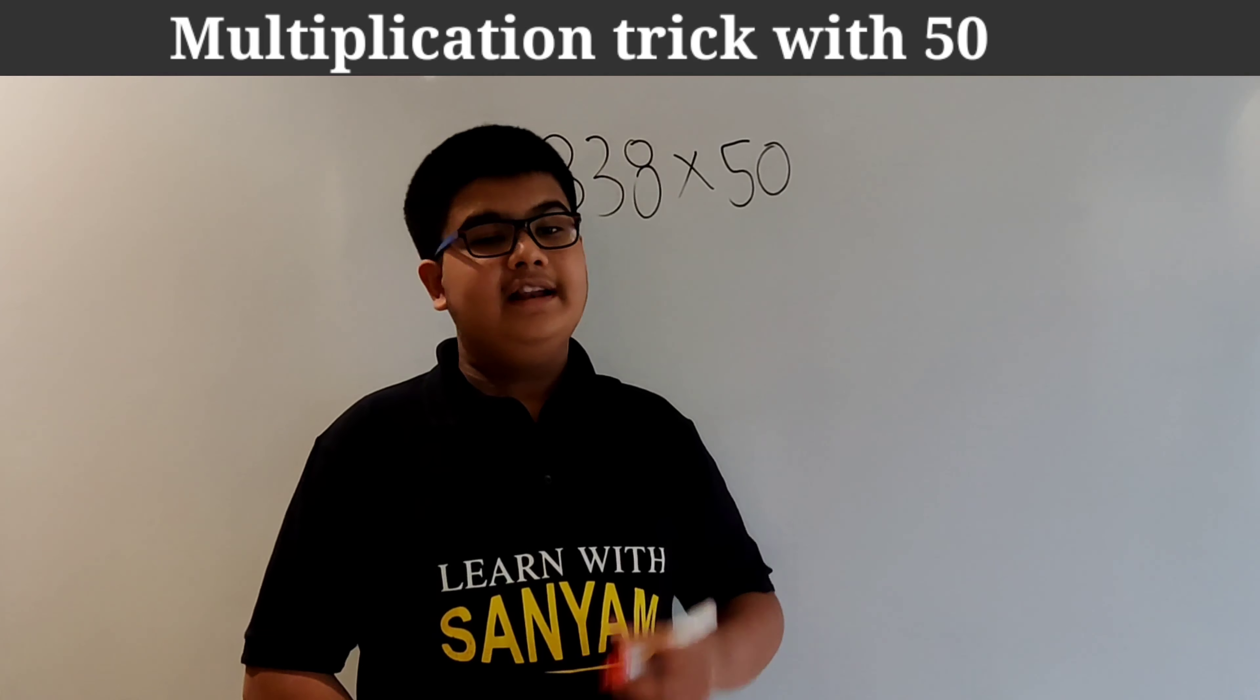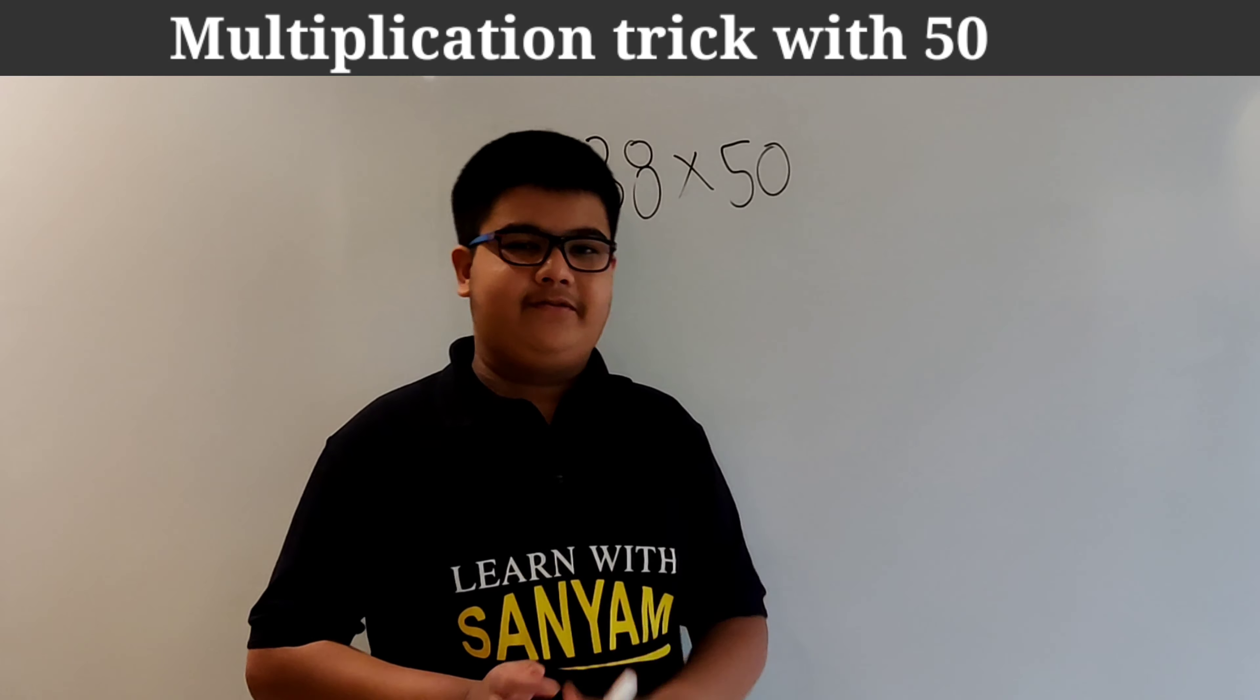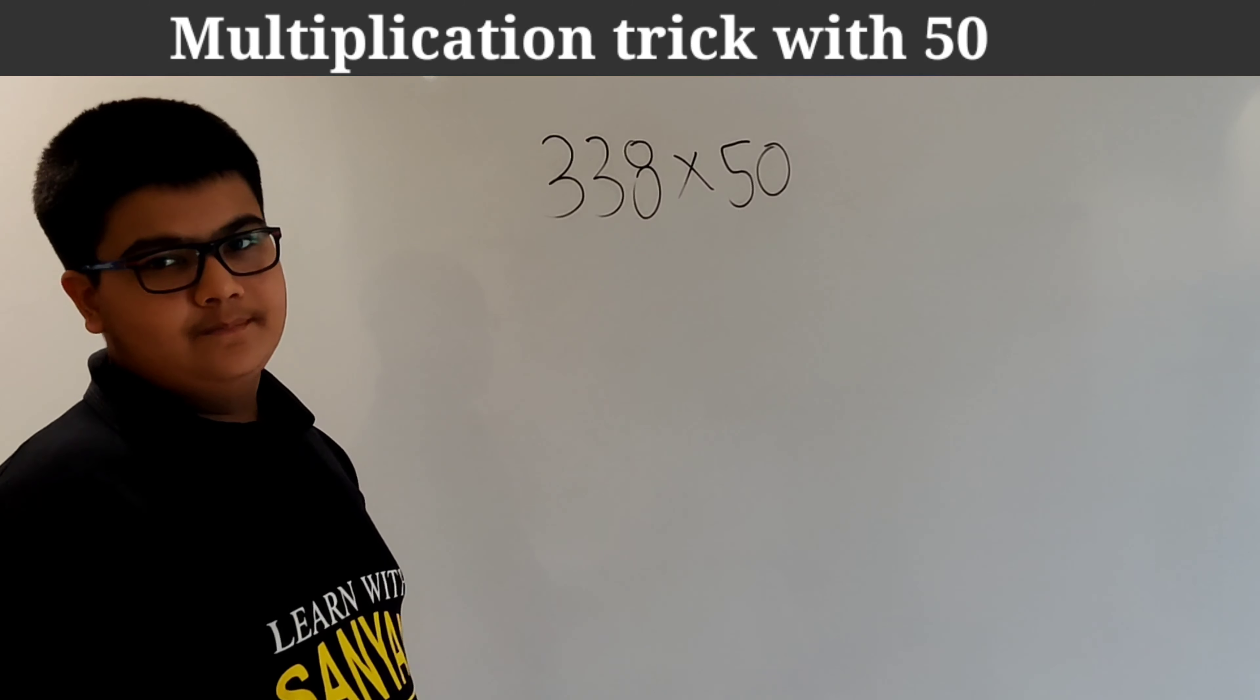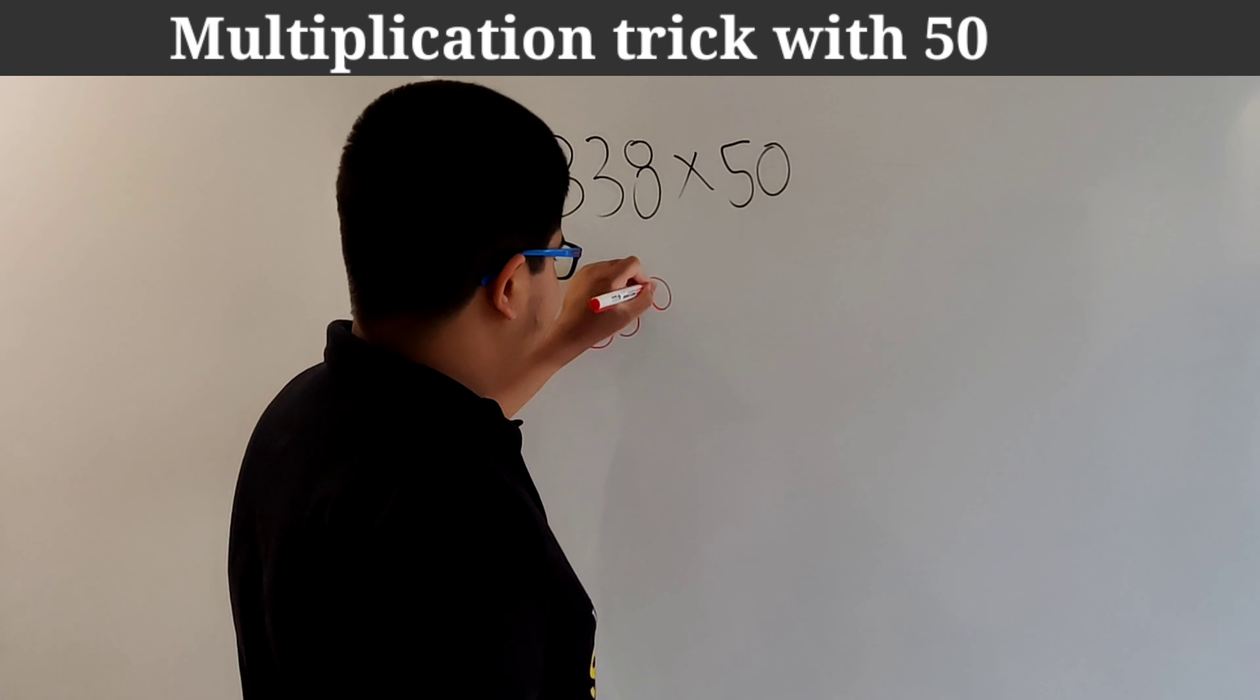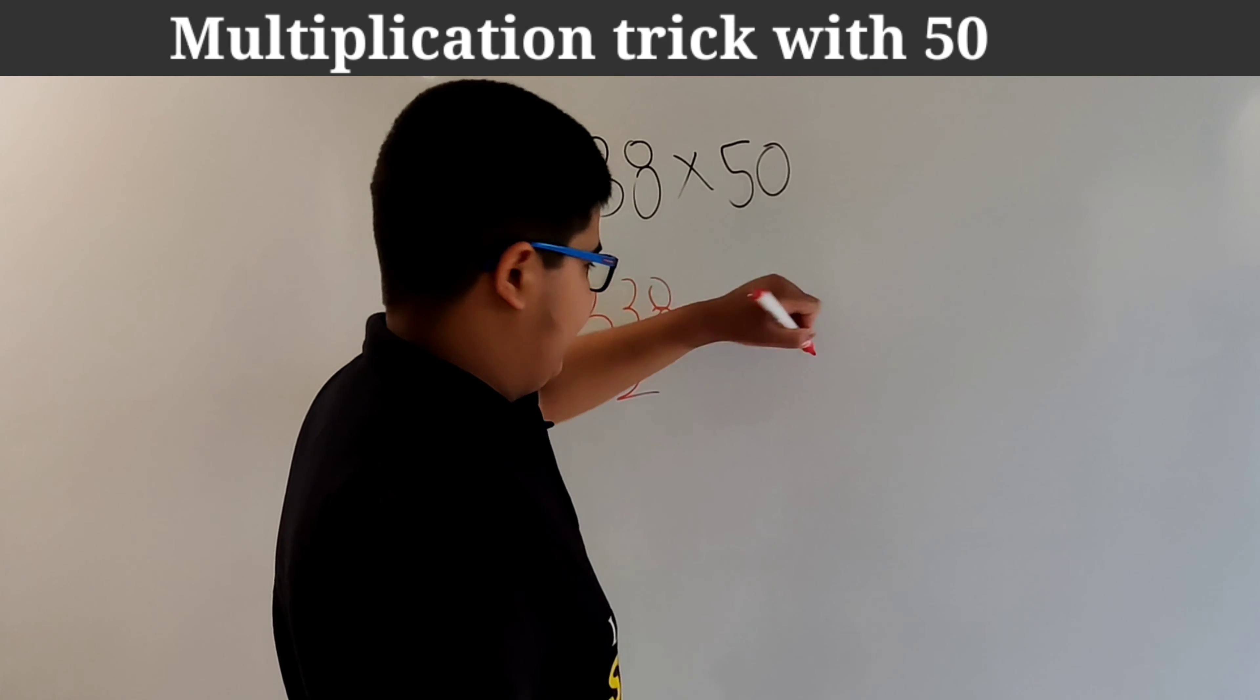So now let's discuss the trick to multiply any number with 50. So it is quite similar to multiplication with 5. So consider that we have to multiply a number 338 by 50. So for this step 1 will remain the same. Just divide the number by 2. So 338 by 2 gives us 169.